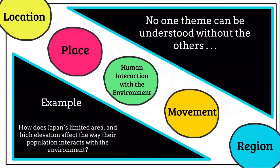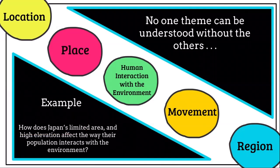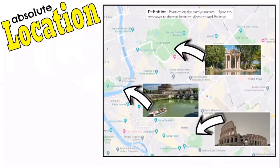An example of this is: how does Japan's limited area and high elevation affect the way their population interacts with the environment? Here, Japan's limited area and high elevation relates to region, and interacting with the environment relates to human interaction with the environment. Geographers take these themes, couple them together, and then get to their answers.